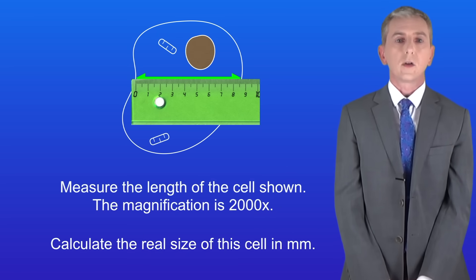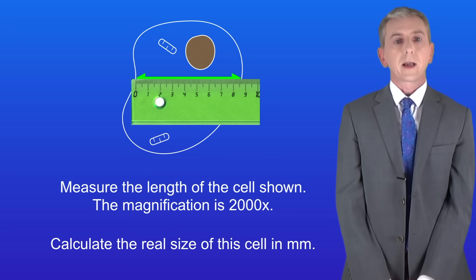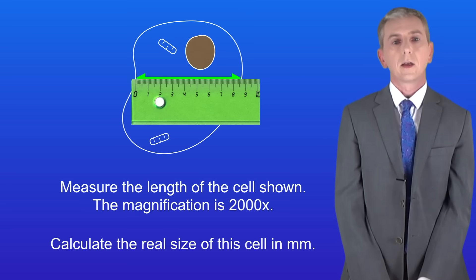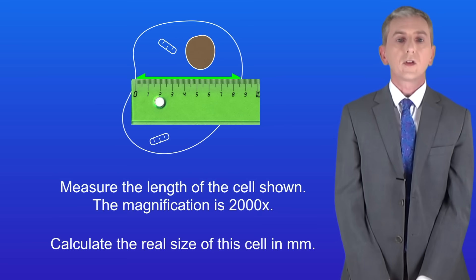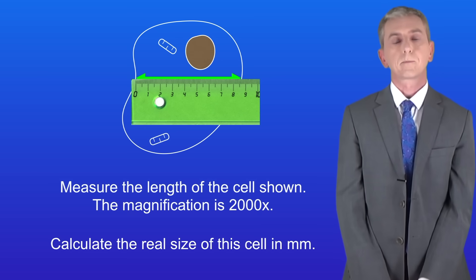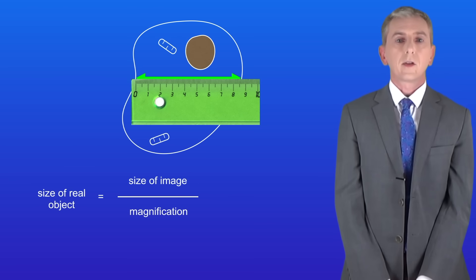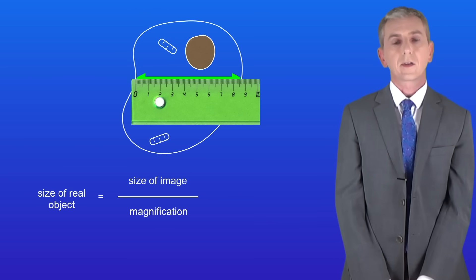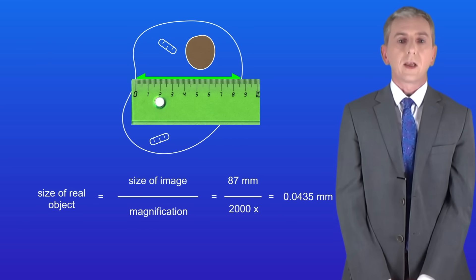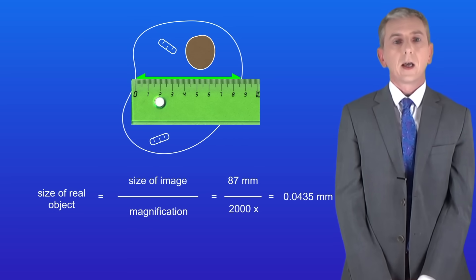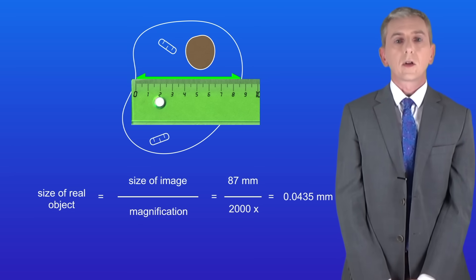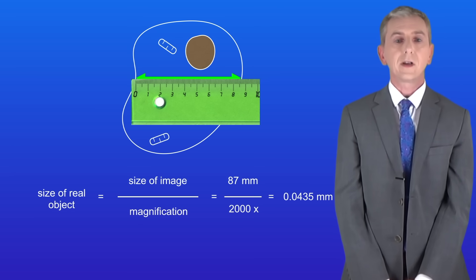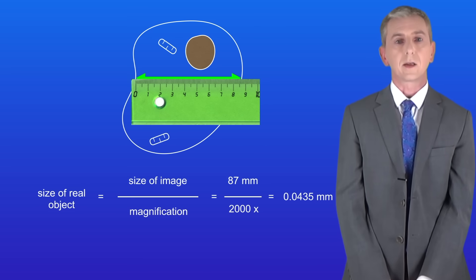Here's a question for you: measure the length of the cell shown. The magnification is 2,000 times — calculate the real size of this cell in millimeters. Pause the video now and try this yourself. The size of the real object is the size of the image divided by the magnification. The size of the image is 87 millimeters and the magnification is 2,000 times, so the size of the real cell is 0.0435 millimeters.